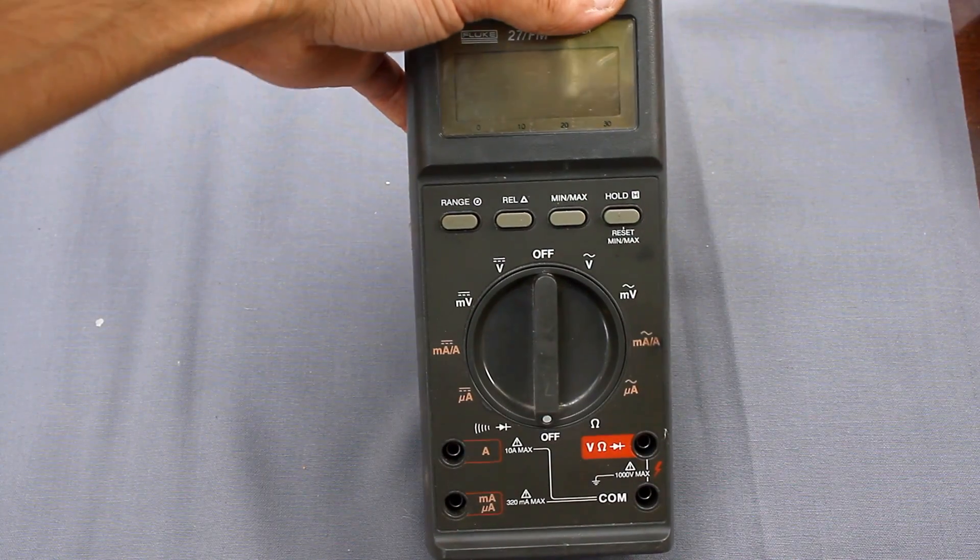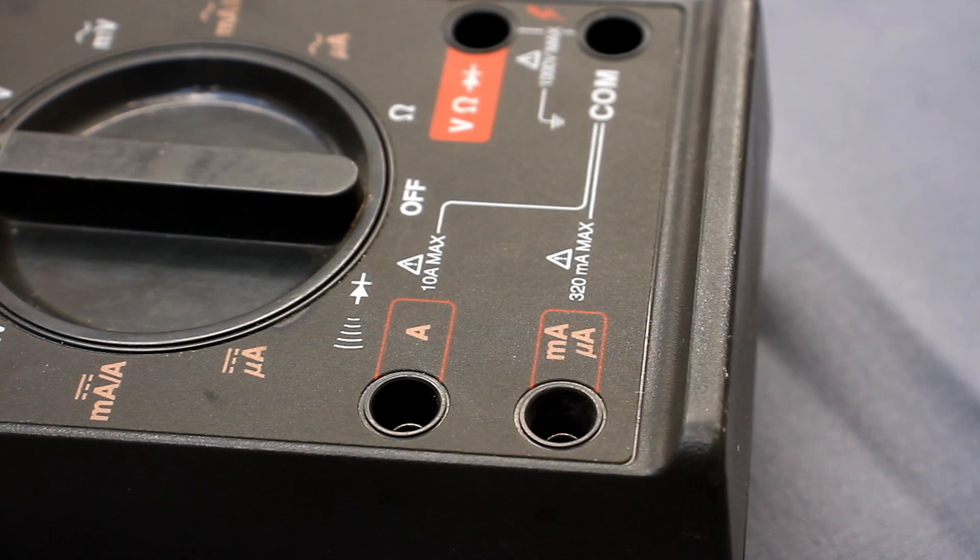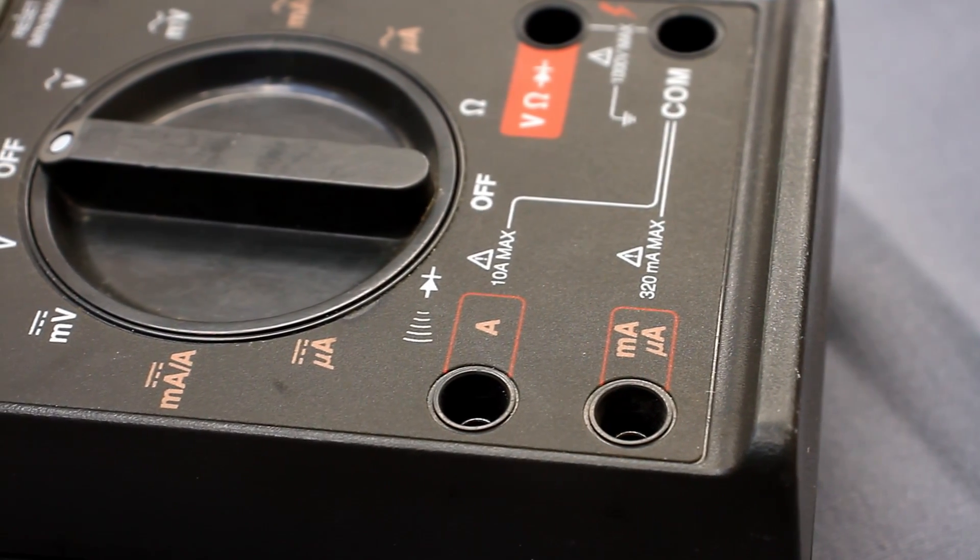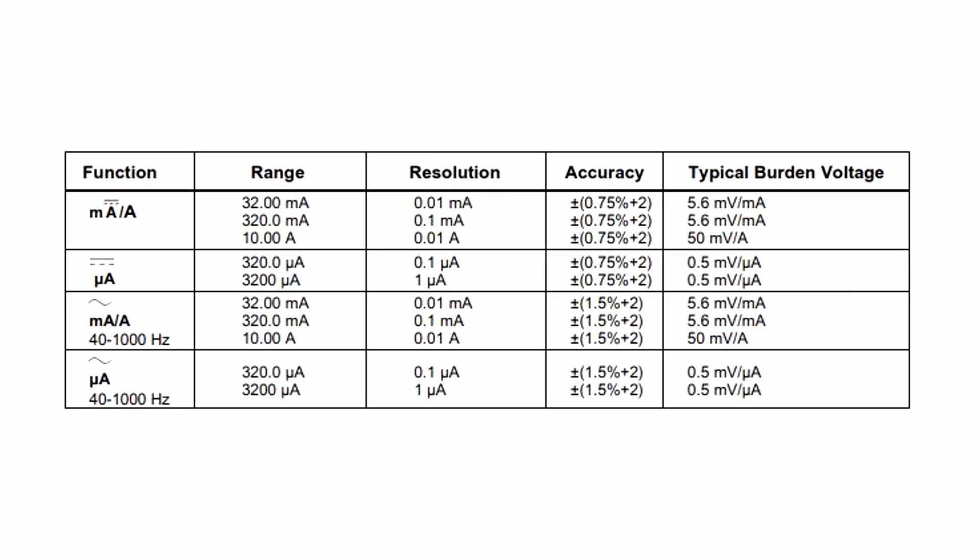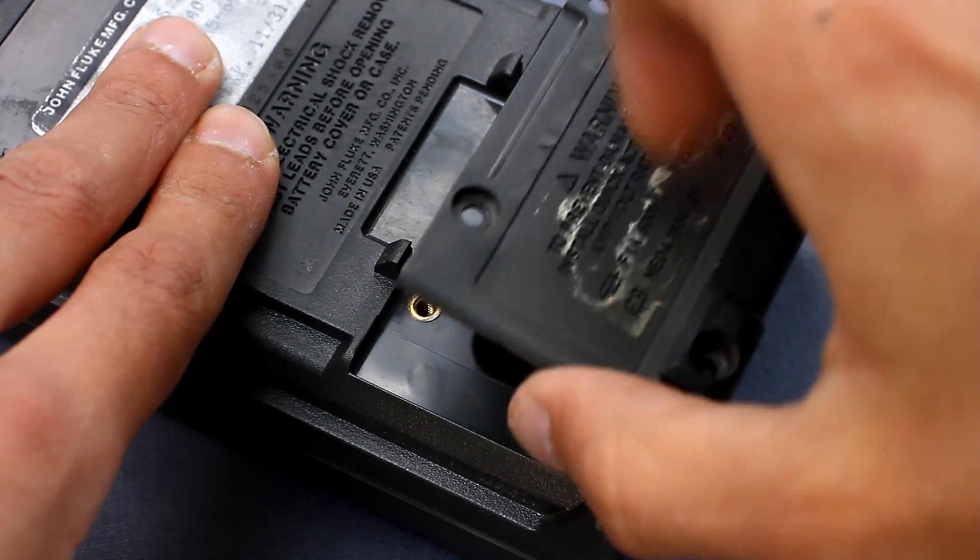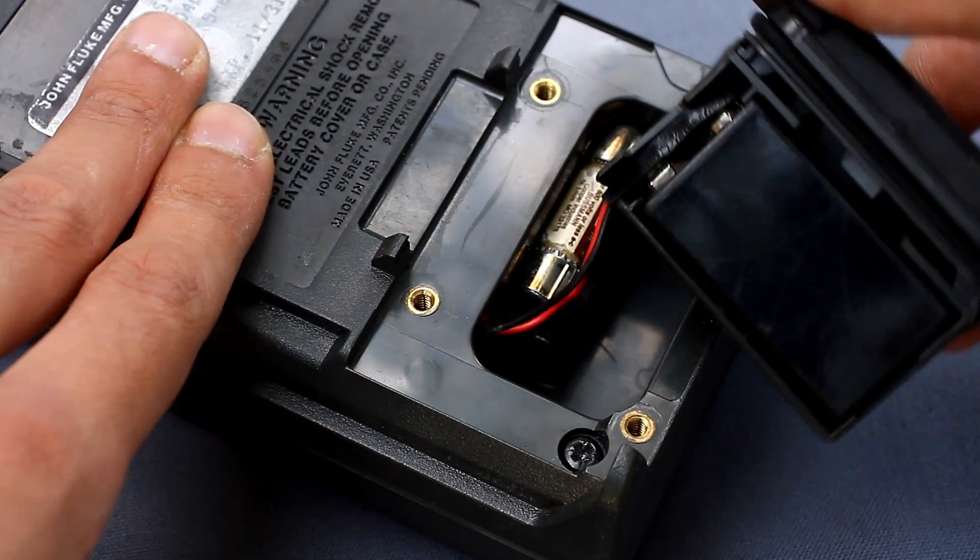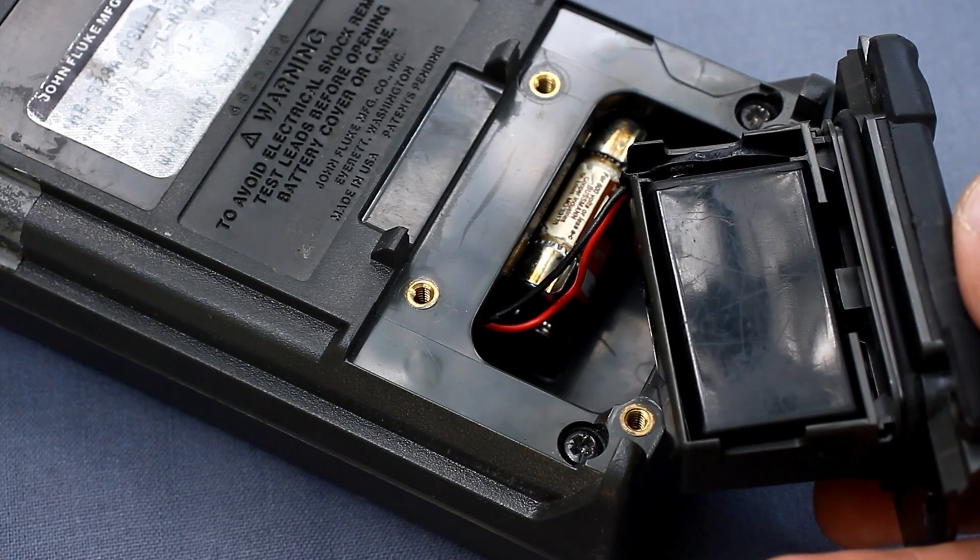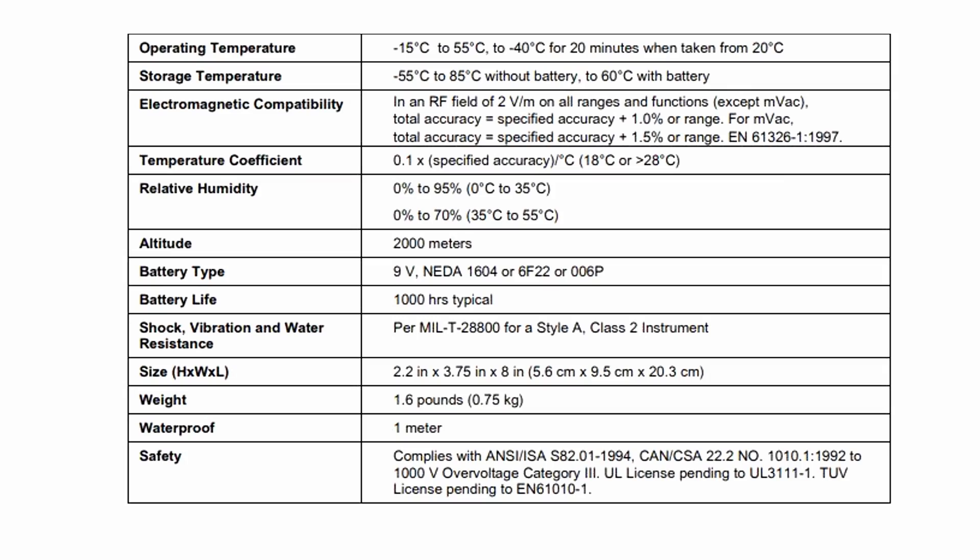The device measures direct current up to 10A. The basic error is 0.75%. Alternating current is the same, but the error is already 1.5%. The device is powered by a 9V battery of 6F22 type. Waterproof up to 1 meter, can work properly in rather harsh conditions, is economical and demonstrant.